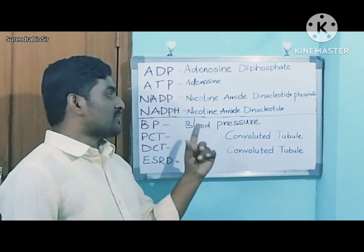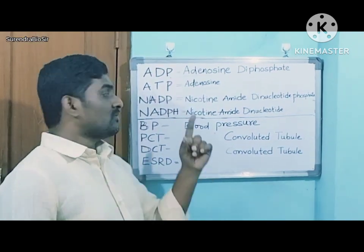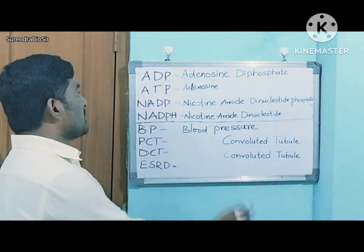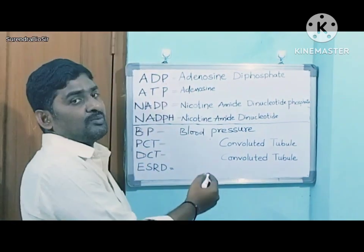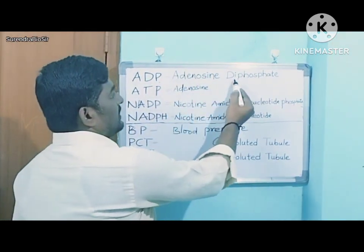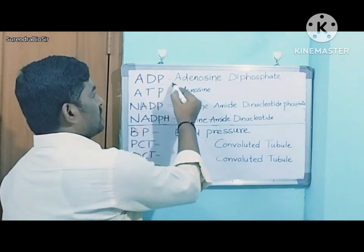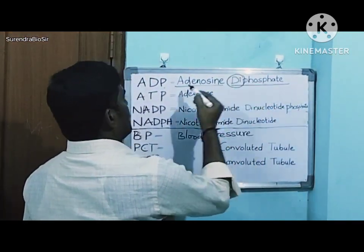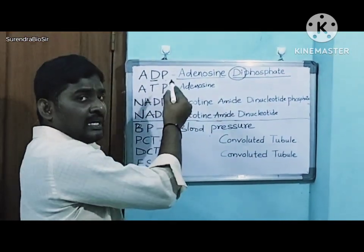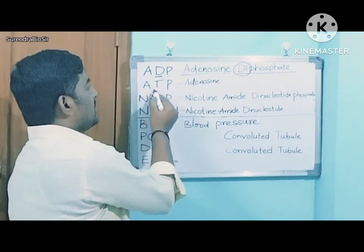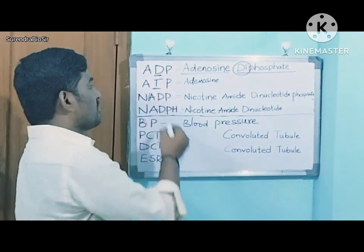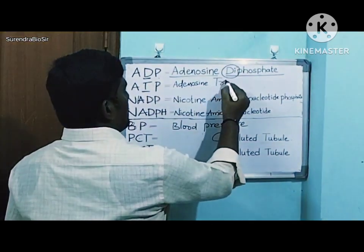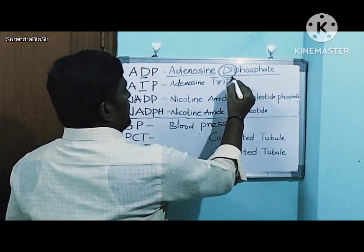In the first chapter, Nutrition, we have only 4 abbreviations. First one: ADP — Adenosine Diphosphate. D means Di. Similarly, we have ATP — Adenosine Triphosphate. T means Tri. So ADP is Adenosine Diphosphate and ATP is Adenosine Triphosphate.